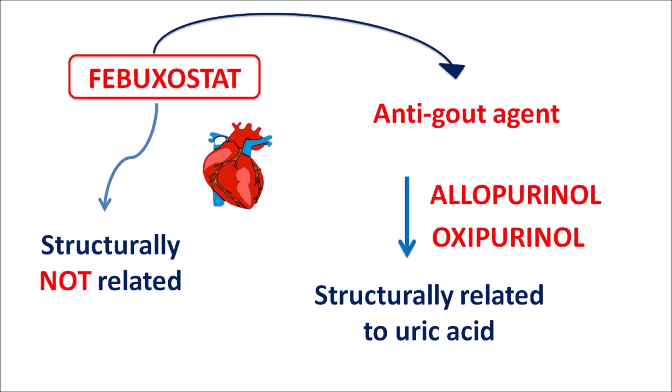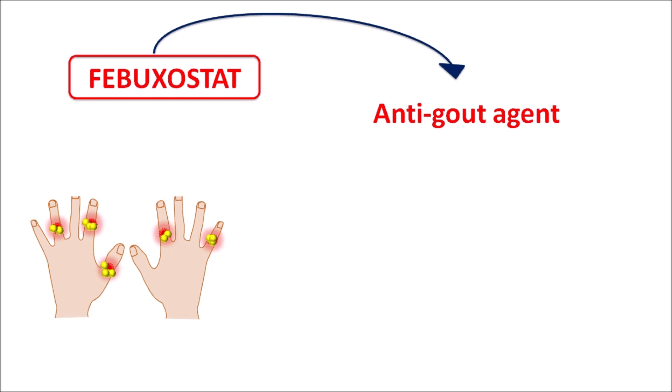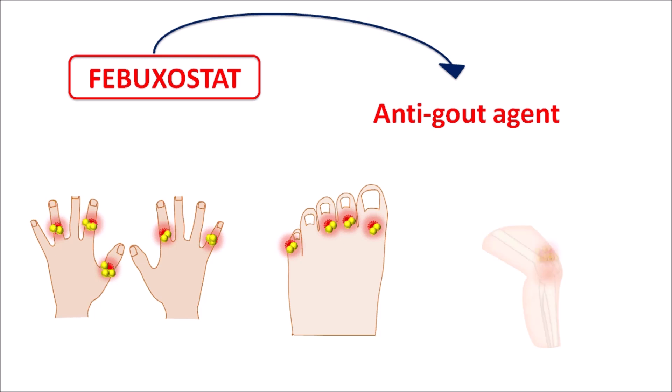Febuxostat is indicated for hyperuricemia where allopurinol is not able to control uric acid levels. It is prescribed in order to minimize serious cardiac events. This drug is indicated for gout which affects the joints of the hands and feet, resulting in joint inflammation and pain. This inflammation can also extend to the knee joints, and febuxostat can reduce uric acid levels, thereby reducing uric acid deposition within the joints.